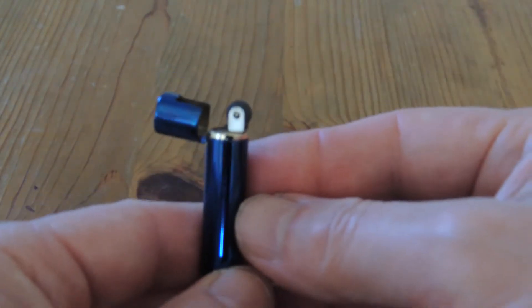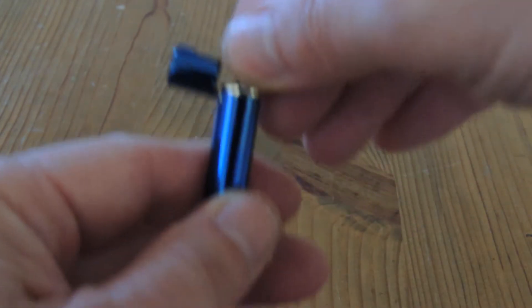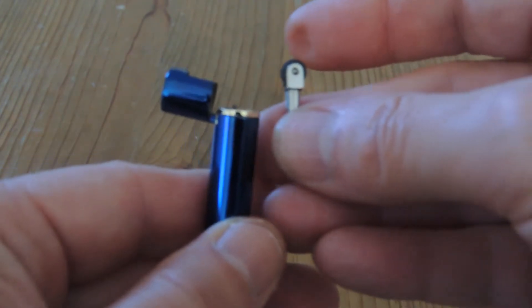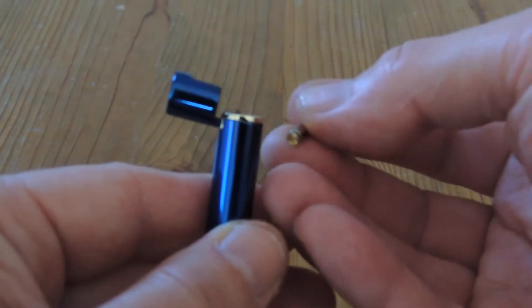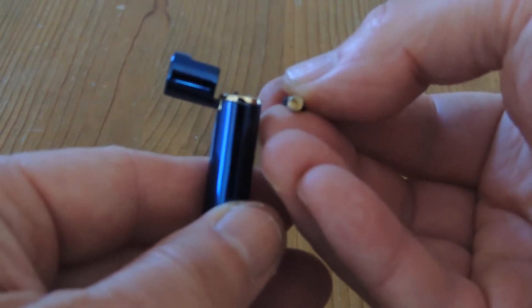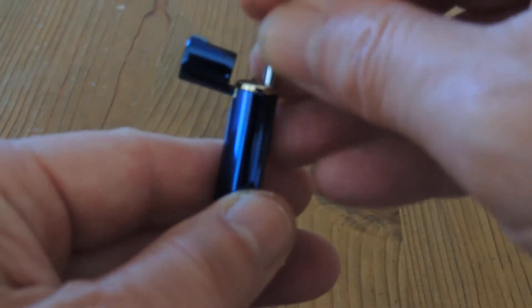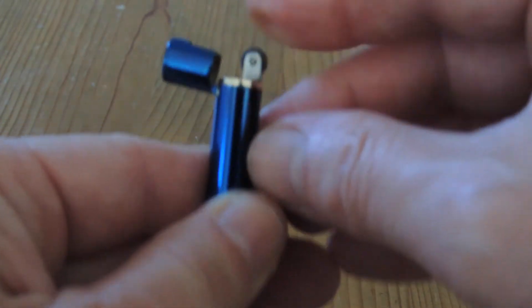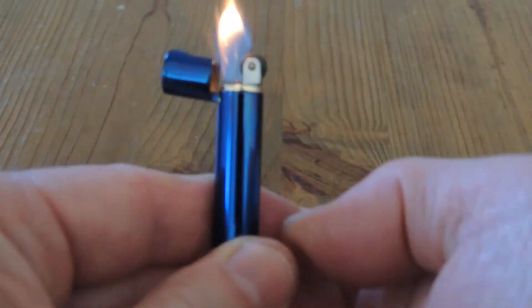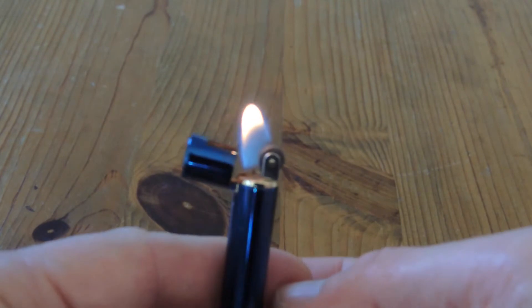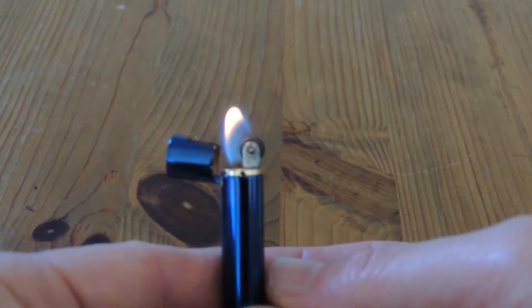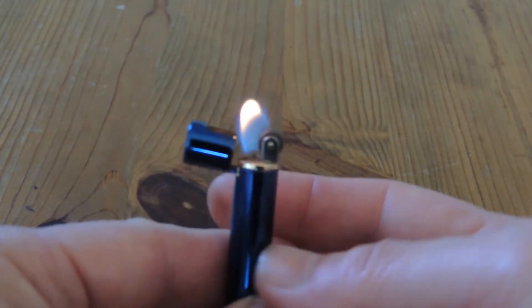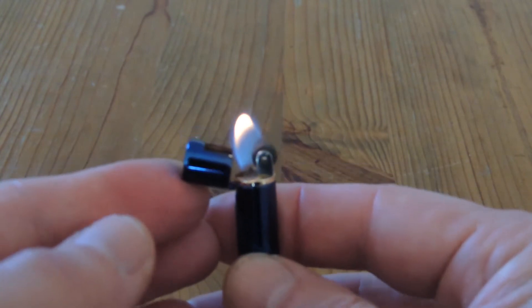Flip that over and the striker wheel can be removed and the flint can be changed by undoing that screw at the bottom. That can be put back in, and the lighter works as per normal. Close the lid to extinguish the lighter.